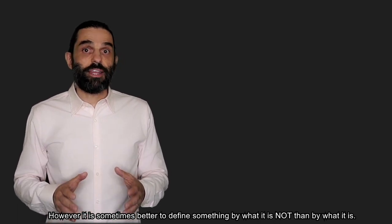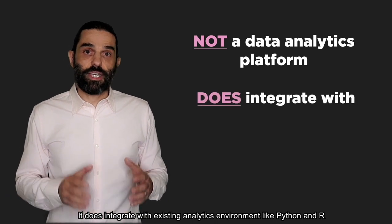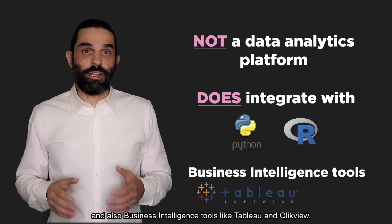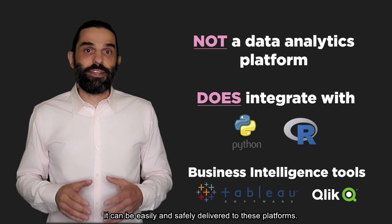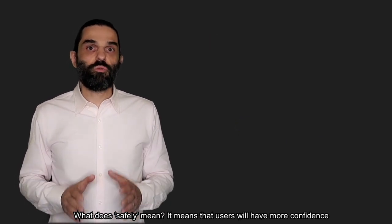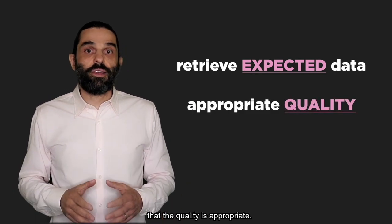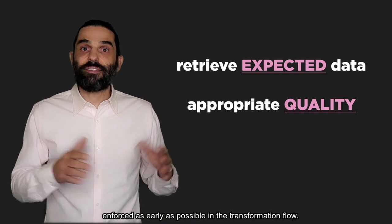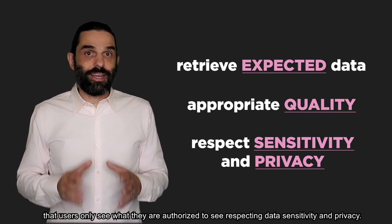However, it is sometimes better to define something by what it is not than by what it is. In this respect, Legend is not a data analytics platform. It does integrate with existing analytics environments like Python and R, and also business intelligence tools like Tableau and Qlik. It is meant to help users organize and transform their data so that it can be easily and safely delivered to these platforms. What does safely mean? It means that users will have more confidence that the data they are retrieving is what they expected, thanks to the transparent lineage, that the quality is appropriate thanks to the centralized and collaborative definition of constraints enforced as early as possible in the transformation flow, and that users only see what they are authorized to see, respecting data sensitivity and privacy.